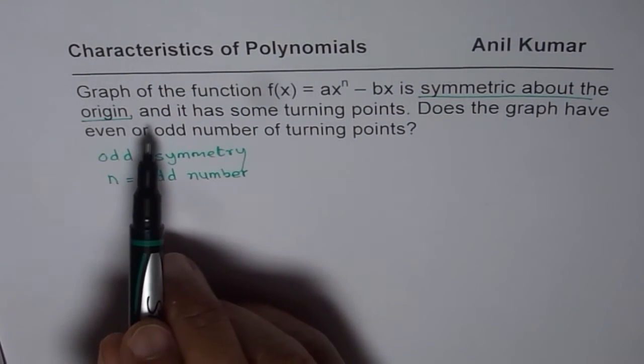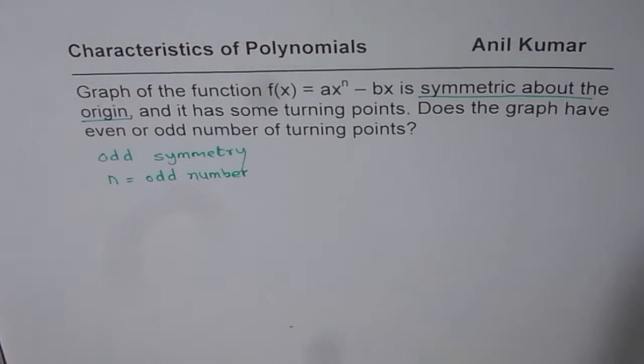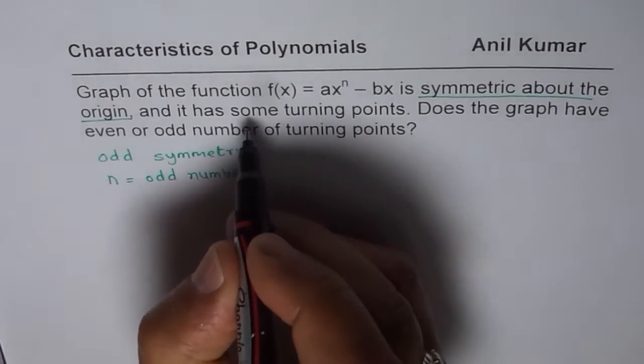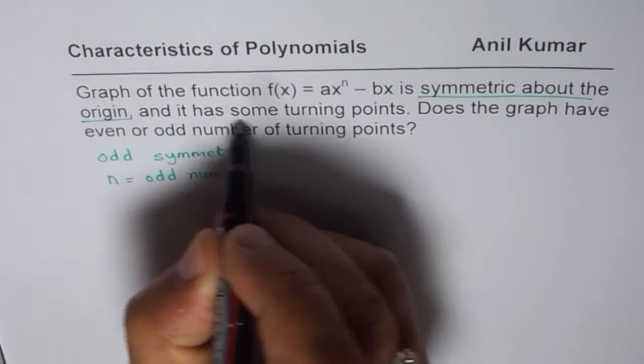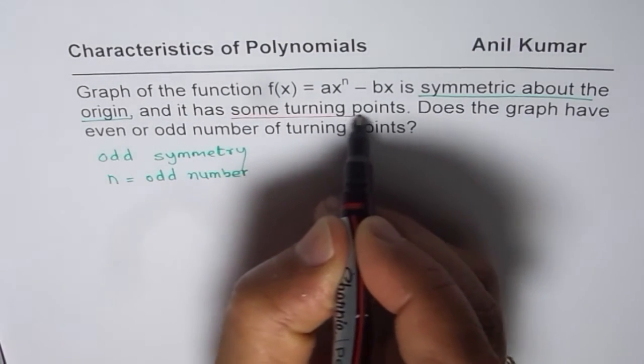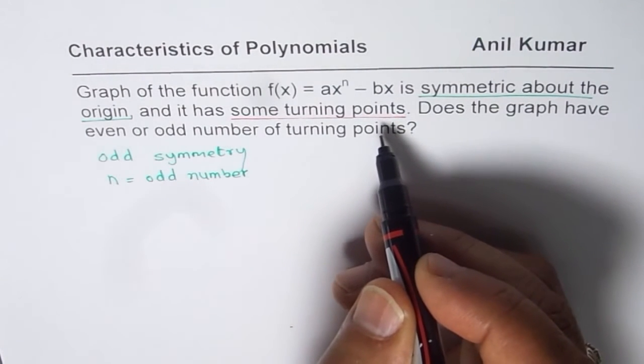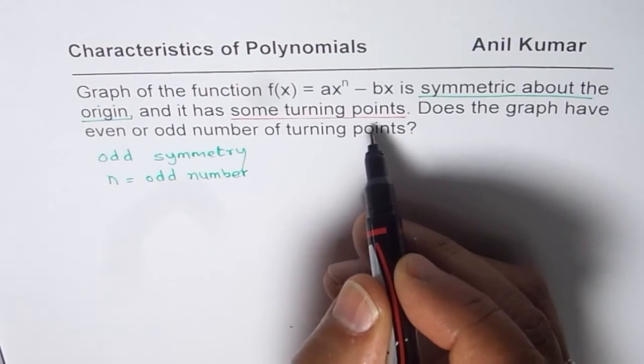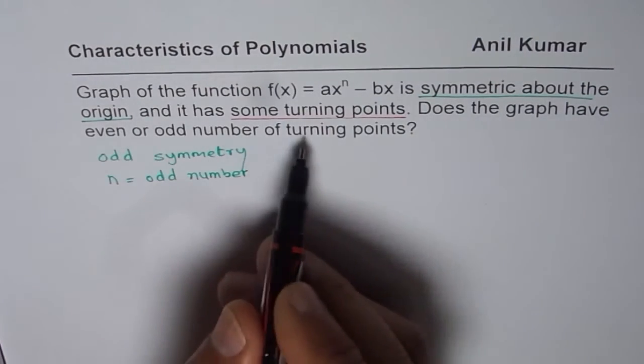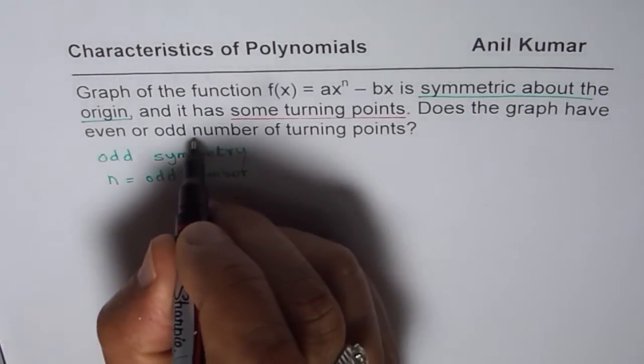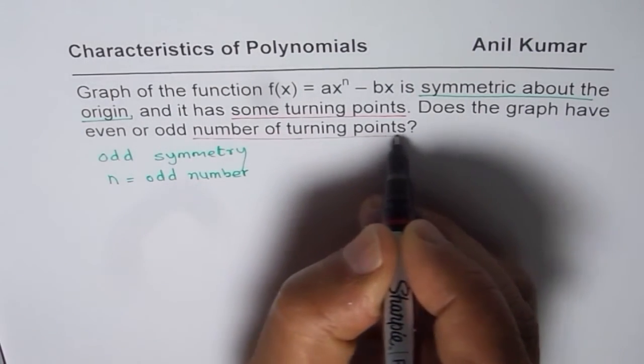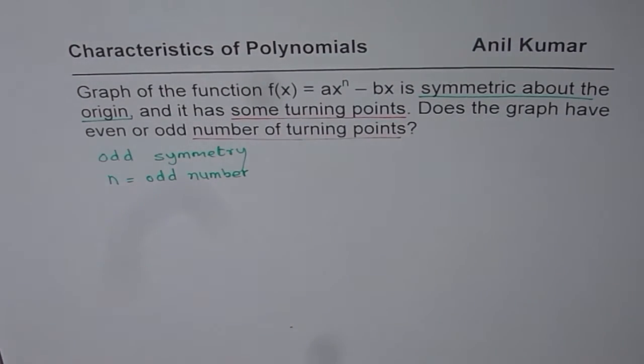Further it says that n has some turning points. Some means more than one, more than zero. It has some turning points, so that means zero turning points is not permitted. Does the graph have even or odd number of turning points? We need to find number of turning points. To explore, what we can do is we can take a few examples.